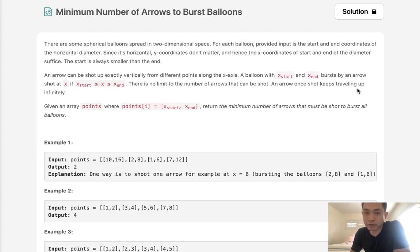An arrow once shot keeps traveling up infinitely. So, given an array of points where points[i] equals [x_start, x_end], return the minimum number of arrows that must be shot to burst all of the balloons.